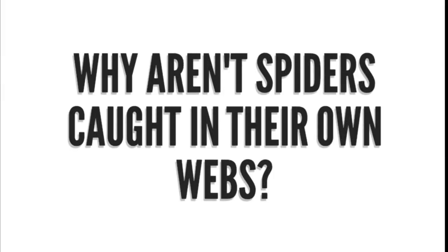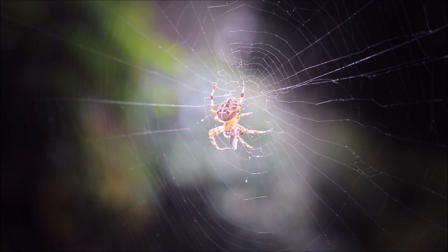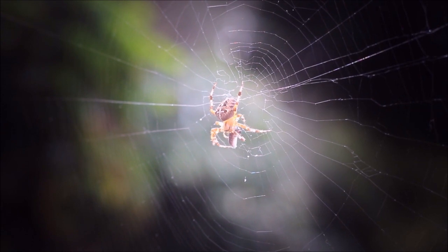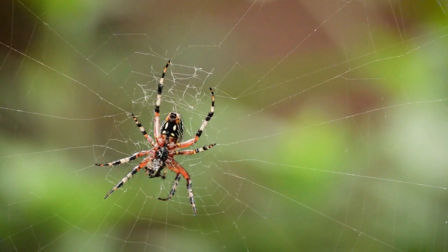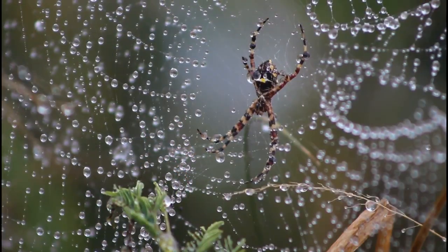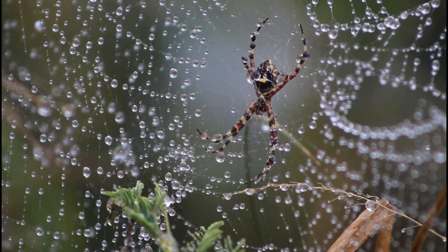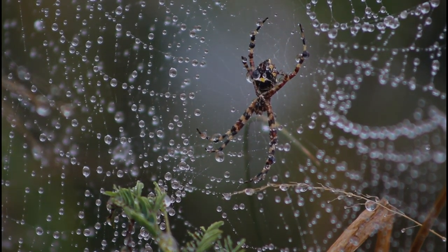Have you ever thought about why spiders aren't caught in their own webs? A spider's web has two kinds of threads. The ones that make a spiral or circular pattern are sticky, while the other threads are not — and those are the ones the spider walks on.